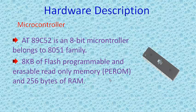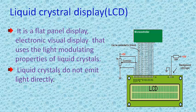The description of hardware components: the microcontroller used is the Atmel AT89C52, which is an 8-bit microcontroller from the Atmel 8051 family. It can access 8KB of flash memory — erasable read-only memory called PROM — and 256 bytes of RAM. This is the controller used in the electronic voting machine.